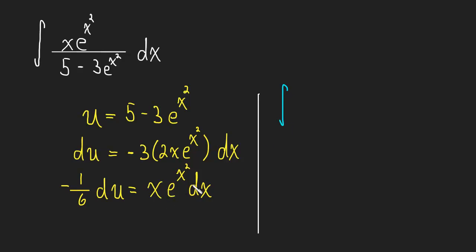x e to the x squared dx is in the numerator. Let me pull the negative one-sixth out. Then in the numerator we have du, and in the denominator, that's simply u.